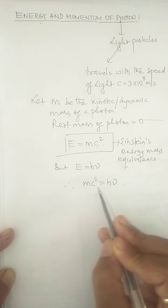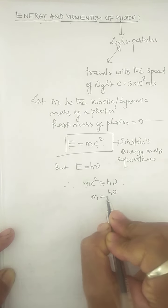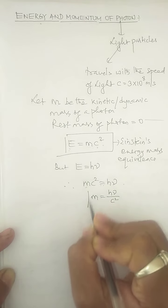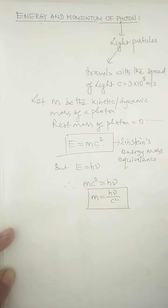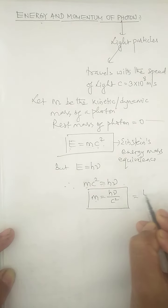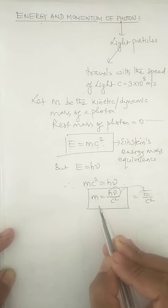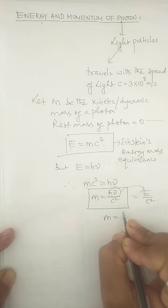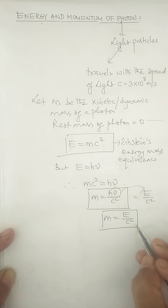So mc² = hν. From this relation we can even measure the mass of the photon. If you are asked to measure the kinetic mass of the photon, it can be measured by m = hν/c², or equivalently m = E/c², since hν = E.